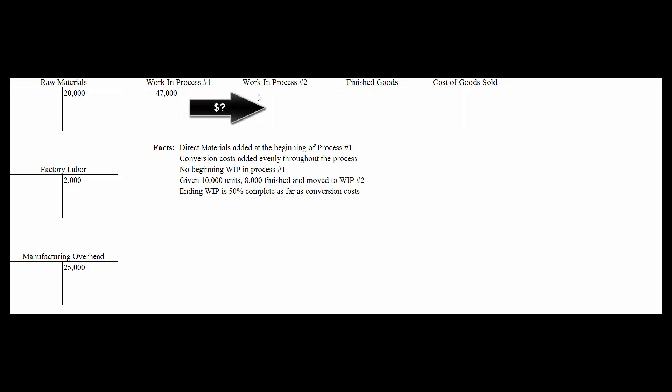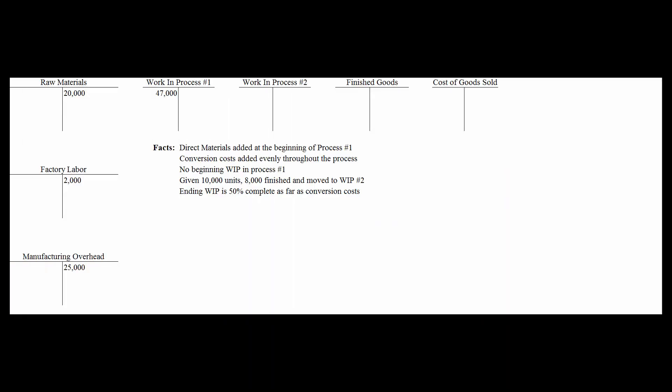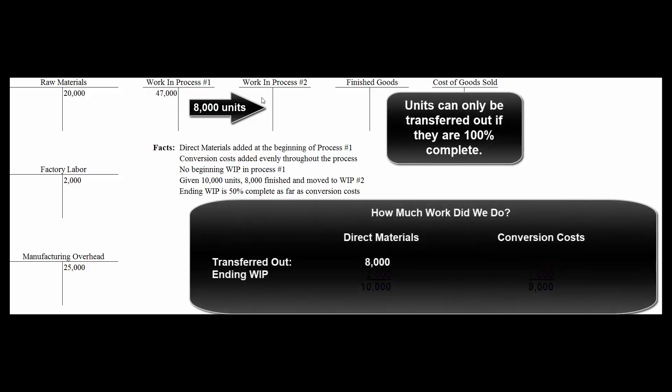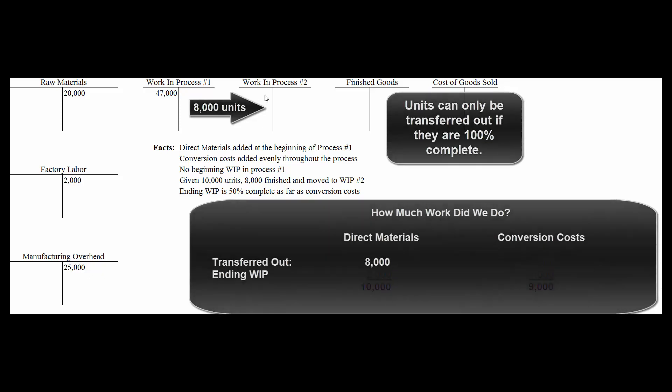Once we figure out how much work we did, we can figure out how many dollars move from work in process number one to work in process number two. Anybody can figure out that 8,000 units went, but someone who has taken an accounting class has to be employed to tell us how many dollars went with those units. Those 8,000 units that moved from work in process number one to number two were 100% complete, so as far as direct materials go, we did 8,000 units worth of work on those.